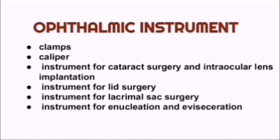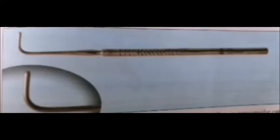The first instrument among hooks and detractors is the lens expressor or hook expressor. It is a flat metal handle with a rounded curve at one end. The tip of the curve is knobbed, as you can see here.